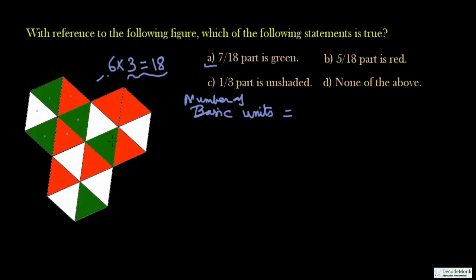Now checking option number a: seven by 18 part is green. So 18 will come in the denominator because the denominator denotes the total number of parts. So it is saying that seven by 18 part is green. Let us count the number of green triangles: one, two, three, four, five. So five out of 18 part is green, so option a is not the right answer.